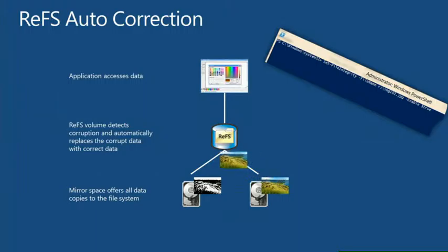ReFS can perform that same automatic corruption detection and fix on the fly. In a mirror storage space with half the mirror on one disk and half on the other: one copy was good, the other corrupt. ReFS detected this when the application went to access the file, picked up the good copy, gave it to the app, and replaced the bad copy with the good copy.